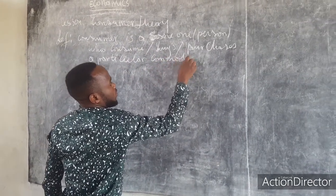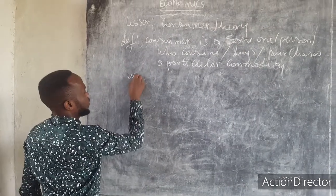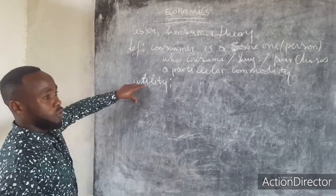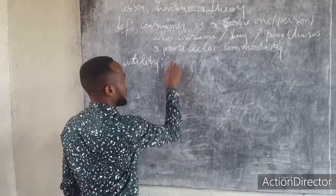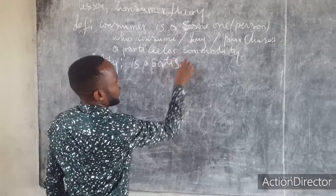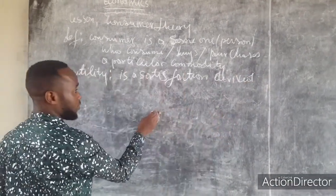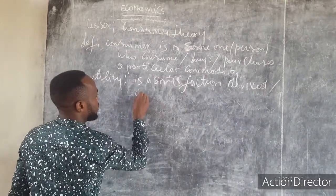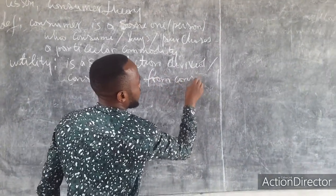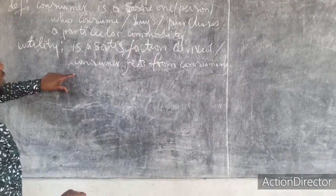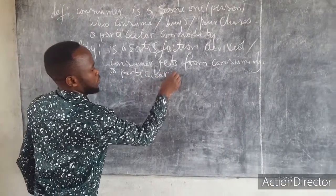After defining a consumer, we now approach utility. What is utility? Utility is a satisfaction derived from consuming a particular commodity — the satisfaction a consumer gains from consuming a particular commodity.